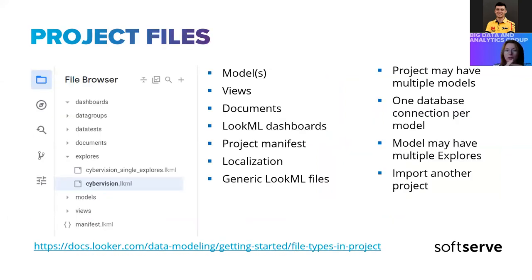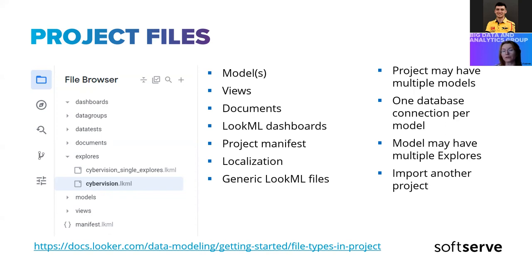Now let's look at the project itself. The main file of a project is the model. One project may have multiple models, but only one active connection to the database. A model can be configured to allow different connections — for example, a dev database and a web database as different instances. But it will actually use only one connection at a time; you need to set which one is current.